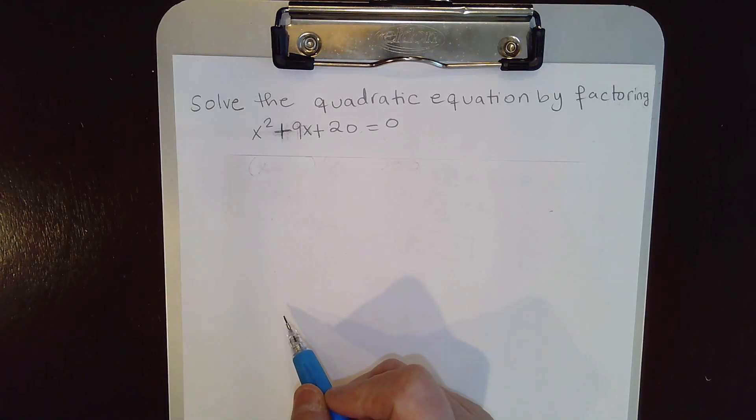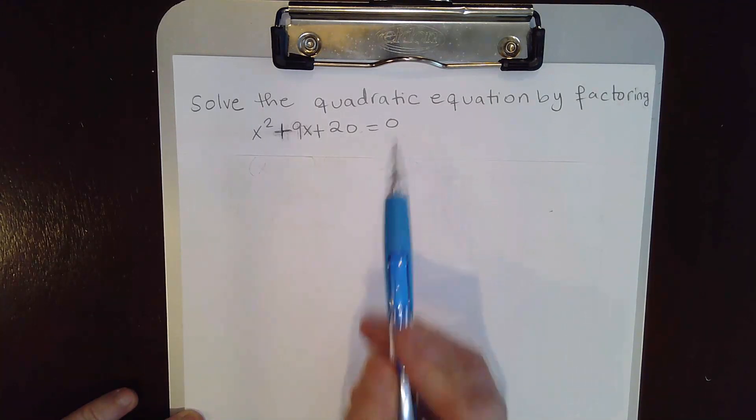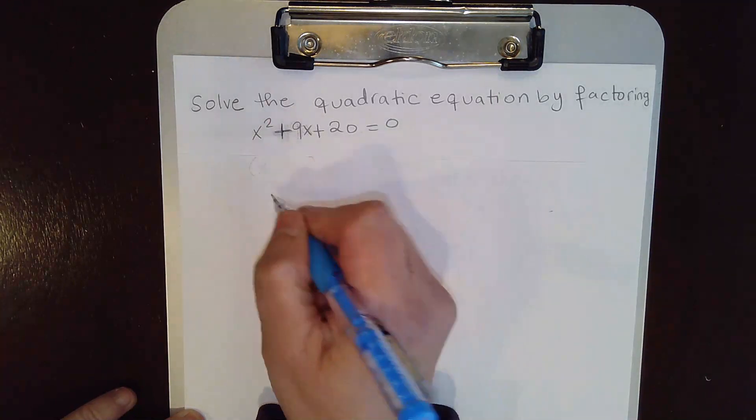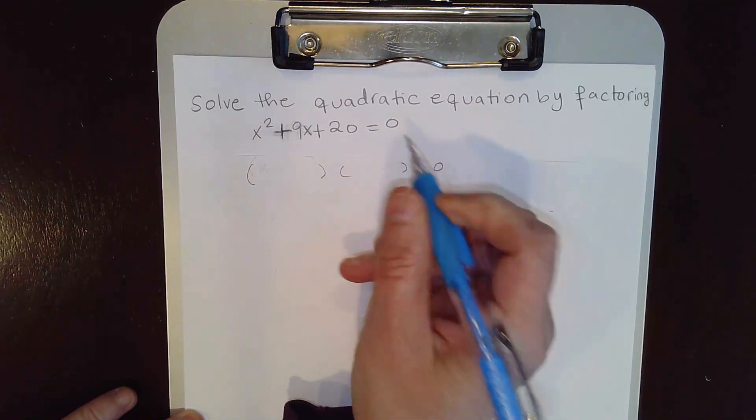Hello everybody, today we'll solve a quadratic equation by factoring. We have x² + 9x + 20 = 0. We need to factor the trinomial on the left side of the equation.